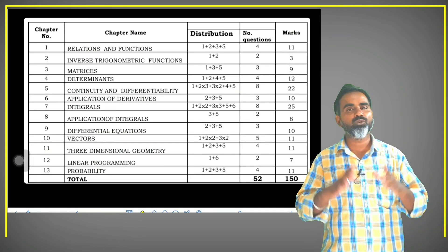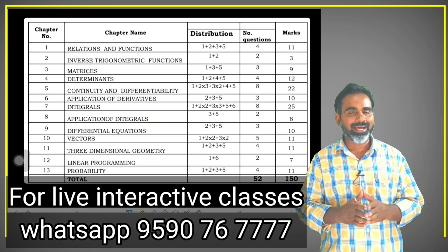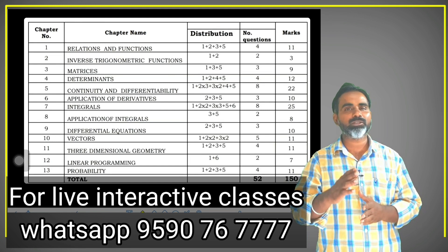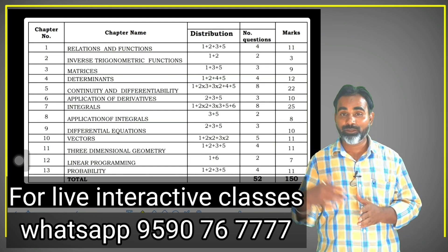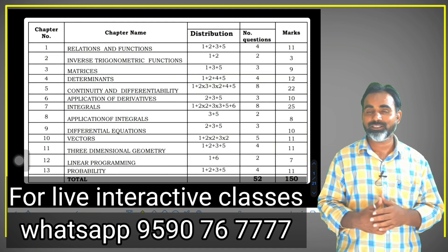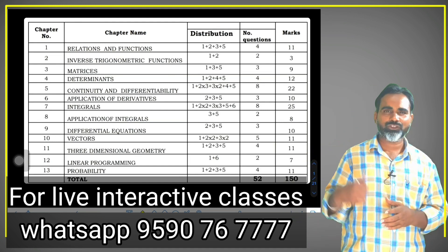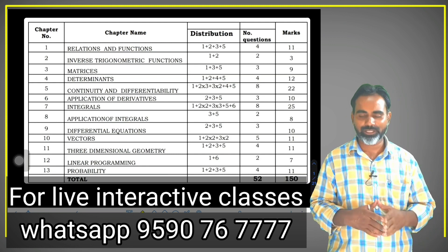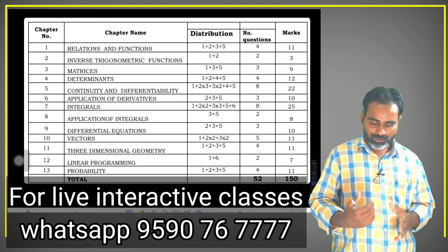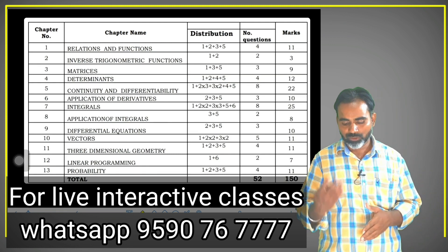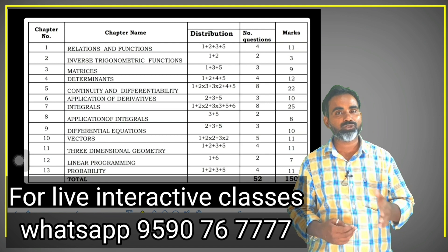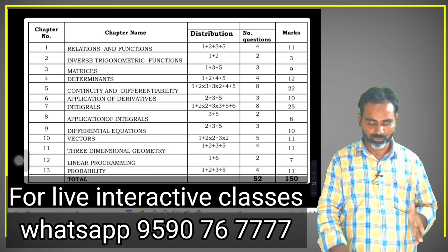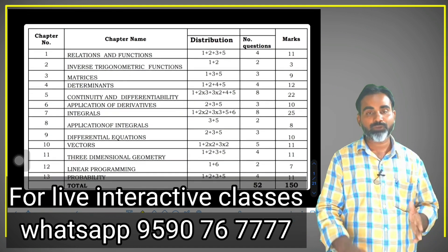What we need to do is the blueprint. As per the latest blueprint, 30% is reduced. If you have a screenshot, you have a time-based model. The relation and function is 11 marks, 4 questions: 1 mark, 2 marks, 3 marks, 5 marks. If you have a screenshot, you can follow them out.